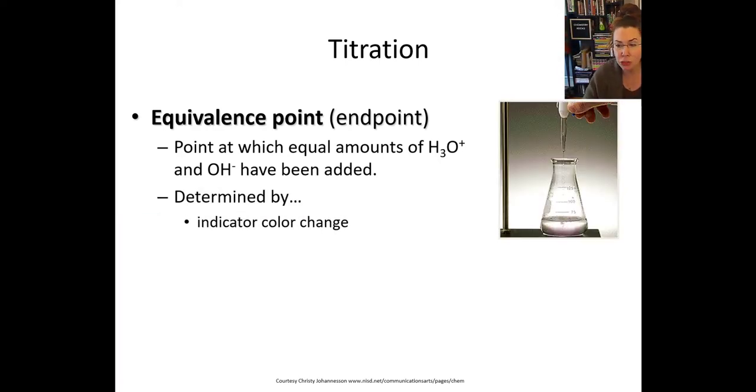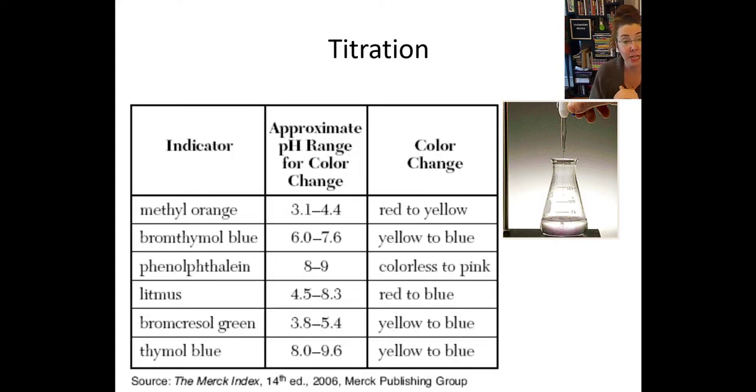Now usually your equivalence point is indicated by a color change. And the only way we can get a solution to change color is we have to use an appropriate indicator. You might remember at the beginning of our unit, we talked about Table M. We had all sorts of indicators that you can use to determine whether something's an acid or whether something's a base. The most common indicator used in titrations is phenolphthalein. Occasionally you might use methyl orange or methyl blue, depending on where you want your end point to fall. But phenolphthalein is a really good indicator because it has a very clear delineation on its color change.